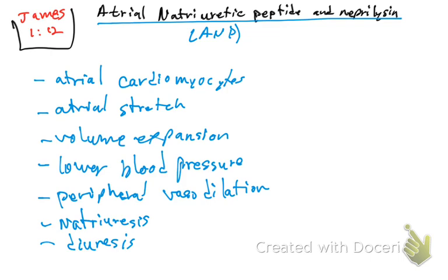The atrial natriuretic peptide binds to the natriuretic peptide receptors on the cell membrane. It is going to activate your guanylate cyclase, forming cyclic GMP.